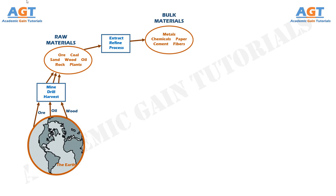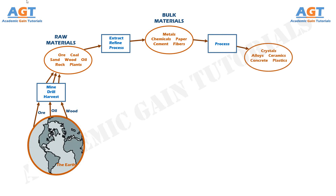Then man modifies or processes these bulk materials into alloys, ceramics, electronic materials, polymers, plastics, crystals, composites, and other compositions to meet performance requirements. These processed or modified materials are the engineering materials.